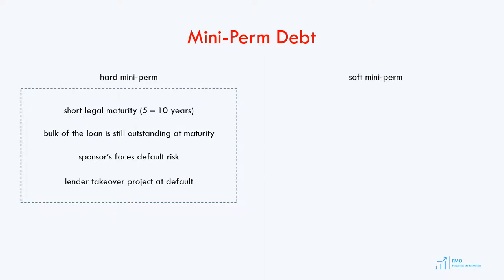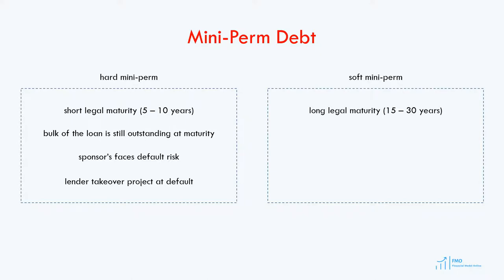The industry has come up with a solution: the soft mini-perm debt structure. In the soft mini-perm structure, the loan has a long legal maturity, such as 15 or 30 years, and there is no default risk faced by the sponsor. Instead, lenders put in place incentives for the project company to refinance the loan earlier than its maturity. These incentives are cash sweep and interest rate step-up. The cash sweep uses cash available for distributions to repay the loan early, while interest rate step-ups are increases in interest rate margins.